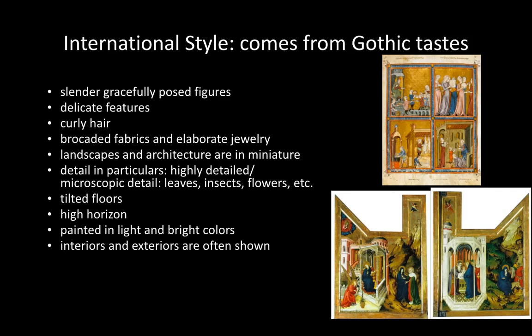In the north, they loved details in particulars. They would put details in the strangest things — they might incorporate a fly or bee buzzing around flowers, and the bee would have so much detail that you could see the dew on its wings. They're just going to have lots and lots of microscopic details: leaves, insects, flowers, and so on.